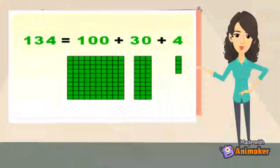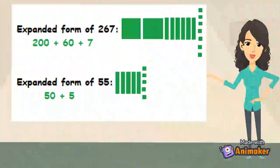The expanded form of 134 is 100 plus 30 plus 4. The expanded form of 267 is 200 plus 60 plus 7. The expanded form of 55 is 50 plus 5.